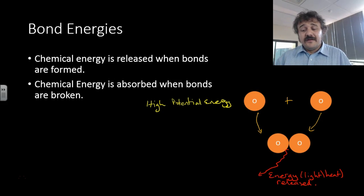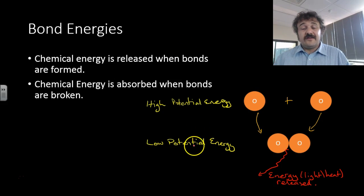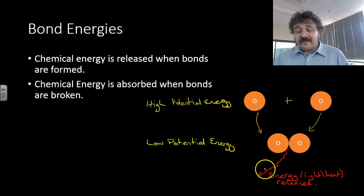As they bond, energy light, in this case light or heat or electricity, can be released. So they move from a high potential energy to a low potential energy. And if you want to break this apart, you need to insert the energy the other way. So bond it in, and then it will split apart. And it will eventually re-bond with something else or itself.